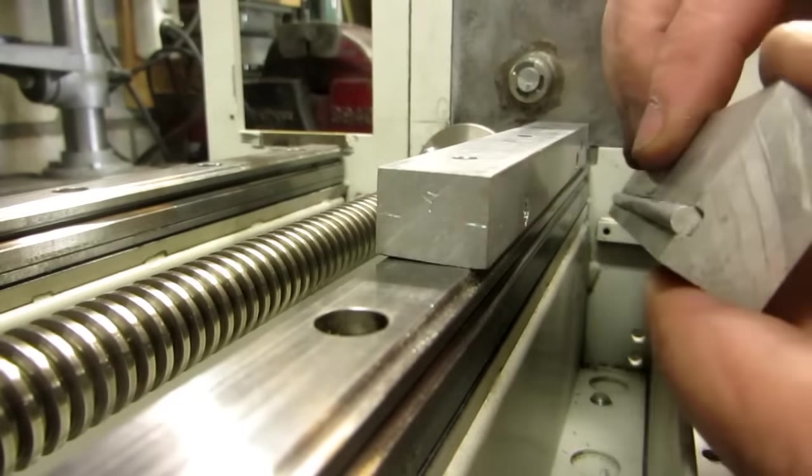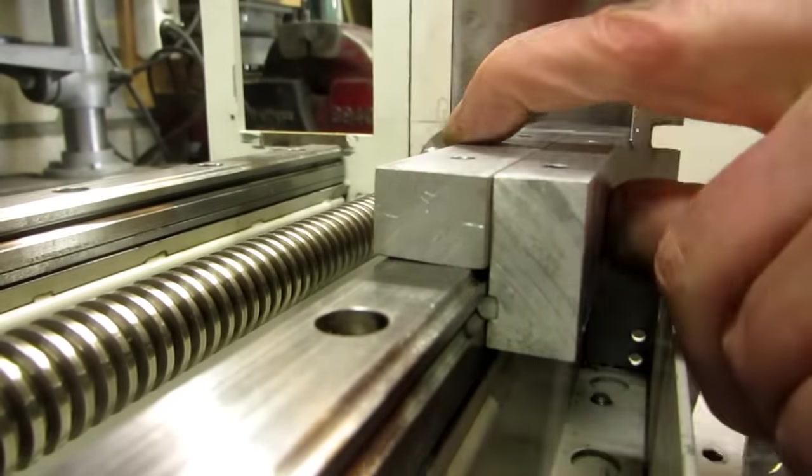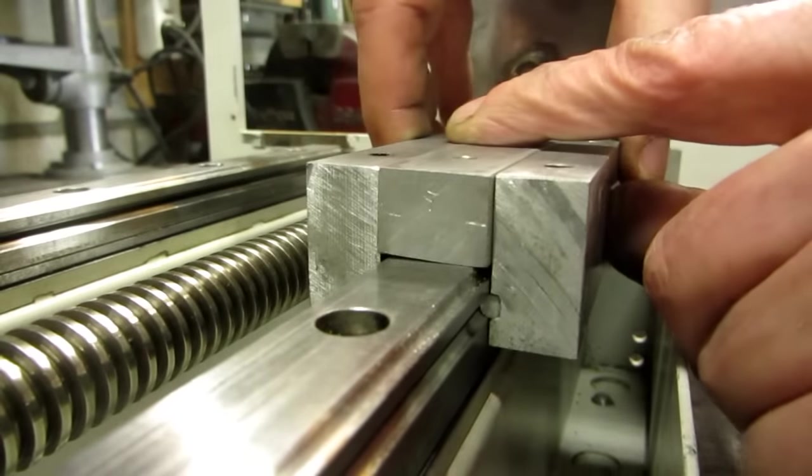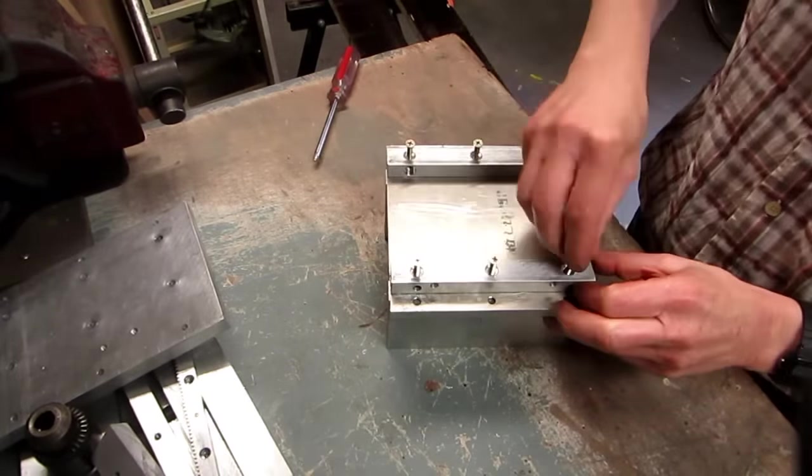I glued a 4mm rod in the bottom bars that fit the linear guide rail. To grip the rails, two bolts will clamp the bars to the rail. Here I'm assembling the bottom section of the tailstock.